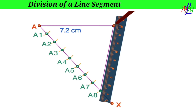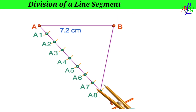Since the sum of the parts in the ratio is 8, join A8 and B using a scale. Now we have to draw a line parallel to A8B from the point A5, because the antecedent of the ratio is 5. To do this, with a fixed radius draw an arc that cuts both lines A8 and A8B.